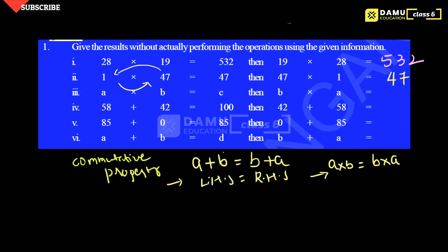So a into b equals c, then b into a also equals c — because a into b equals b into a, we get the same answer. Next: 58 plus 42 equals 100, and changing places, 42 plus 58 is also 100. Then 85 plus 0 equals 85, and 0 plus 85 is also 85.